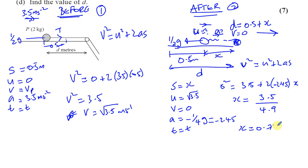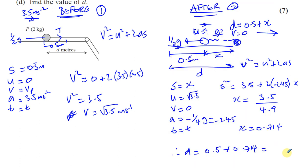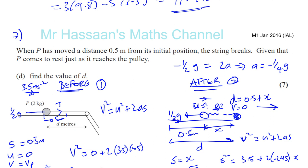So therefore, D is 0.5 plus X. So you just add 0.5 to this. That gives you 1.21 to 3 significant figures. And there we have our answer for part D of this question. I hope that was clear. Thank you for watching.